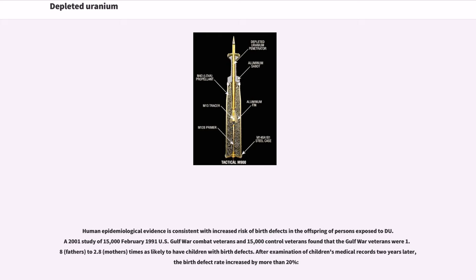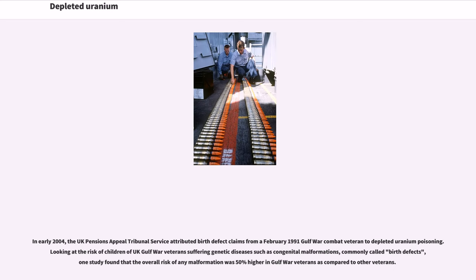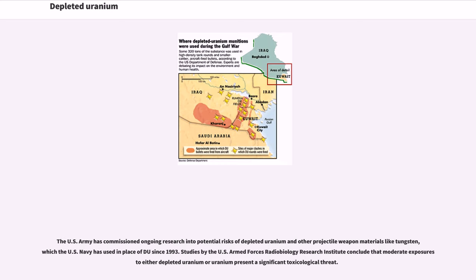After examination of children's medical records two years later, the birth defect rate increased by more than 20%. In early 2004, the UK Pensions Appeal Tribunal Service attributed birth defect claims from a February 1991 Gulf War combat veteran to depleted uranium poisoning. One study found that the overall risk of any malformation was 50% higher in Gulf War veterans compared to other veterans. The U.S. Army has commissioned ongoing research into potential risks of depleted uranium and other projectile weapon materials like tungsten, which the U.S. Navy has used in place of DU since 1993. Studies by the U.S. Armed Forces Radiobiology Research Institute conclude that moderate exposures to either depleted uranium or uranium present a significant toxicological threat.